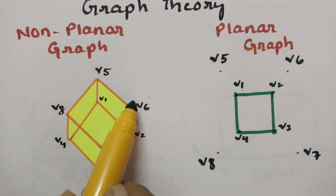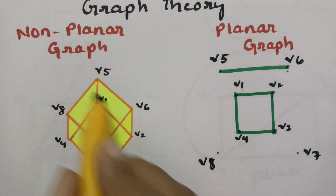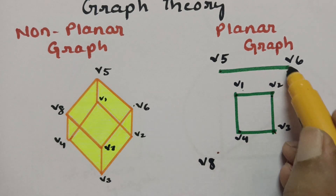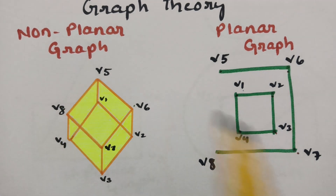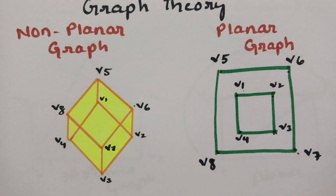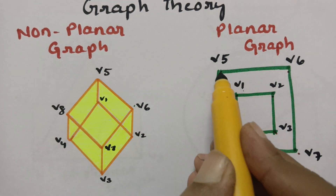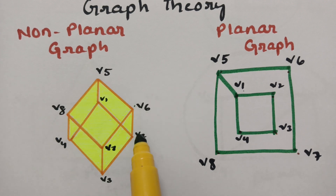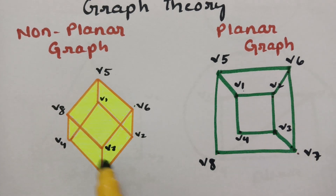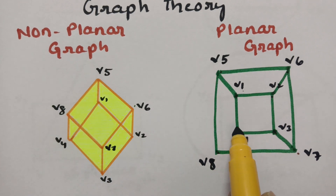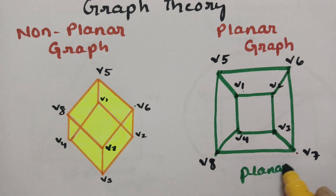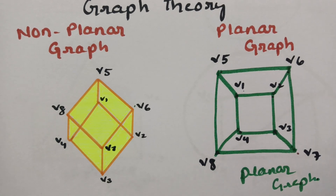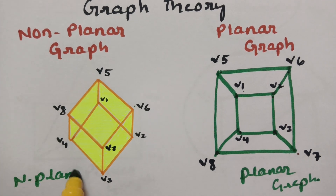Continuing: V8 to V5, then the cross-connections: V1 to V5, V2 to V6, V7 to V3, and V4 to V8. So this is a planar graph — there are no edge crossings.